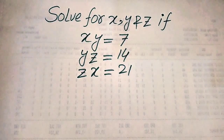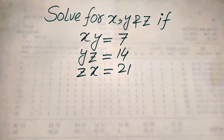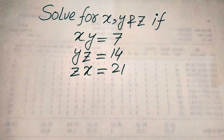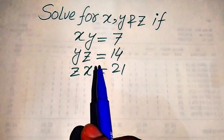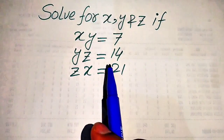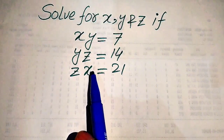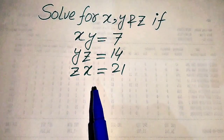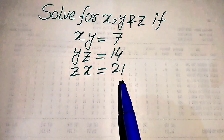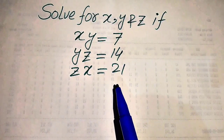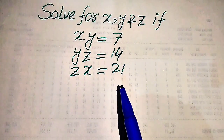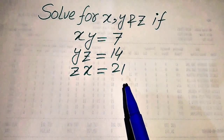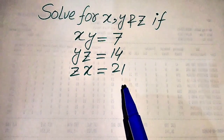Hello everyone, welcome to solve this nice math algebra problem. Here we have xy equals 7, yz equals 14, and zx equals 21, and we solve this problem for the values of x, y, and z.